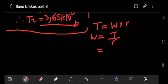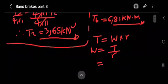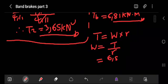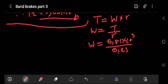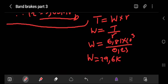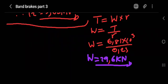This is our maximum torque. To calculate the maximum load, we use: torque equals load times radius. So the weight equals 6.81 times 10 to the power of 3 divided by the drum radius 0.23, giving a maximum load of approximately 29 kilonewtons.